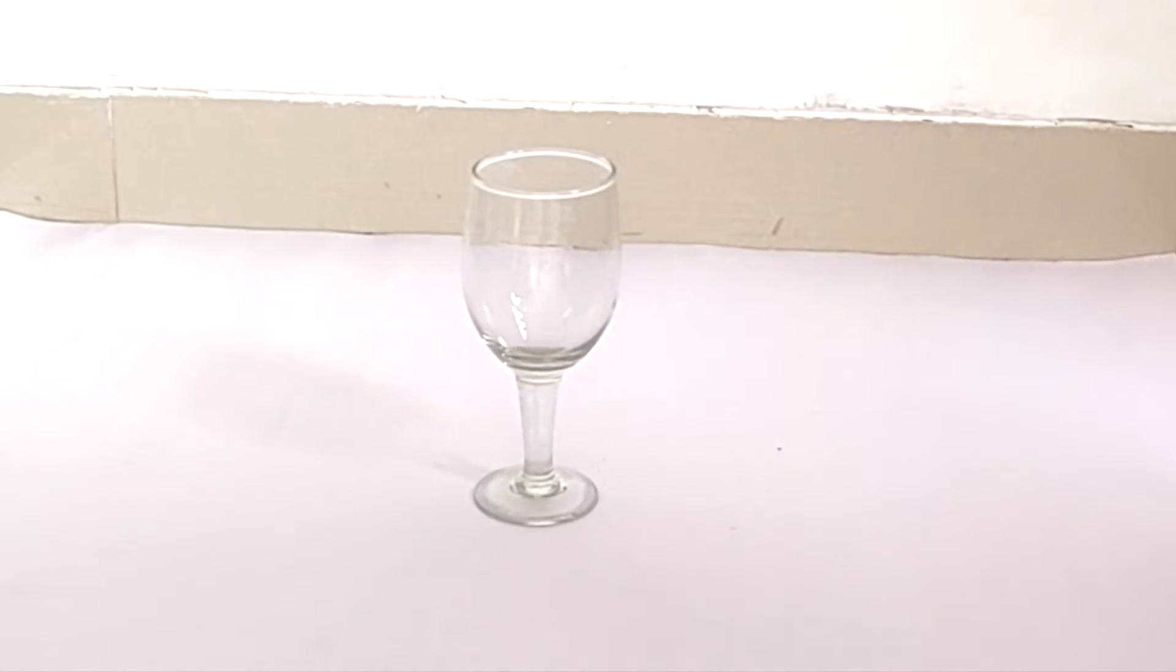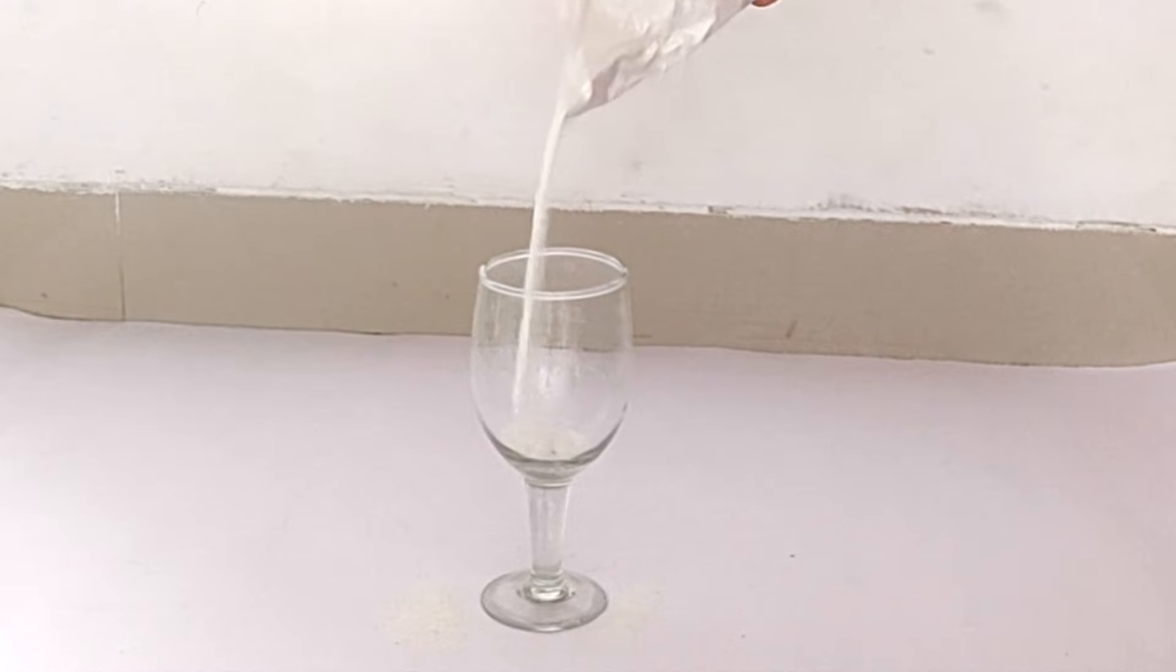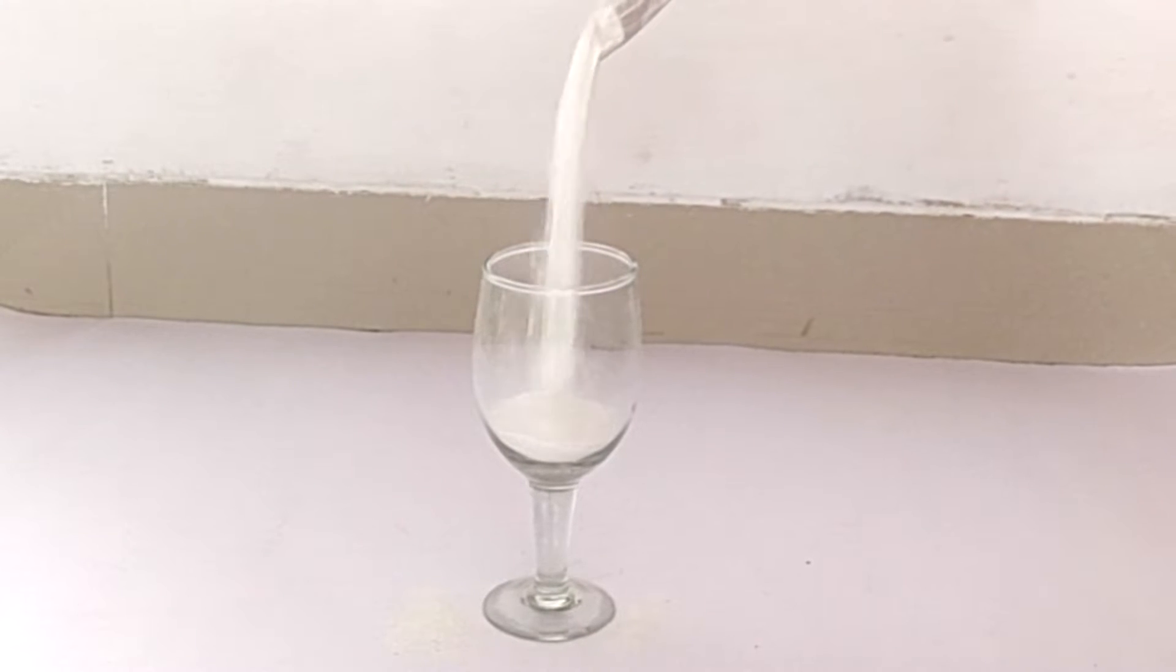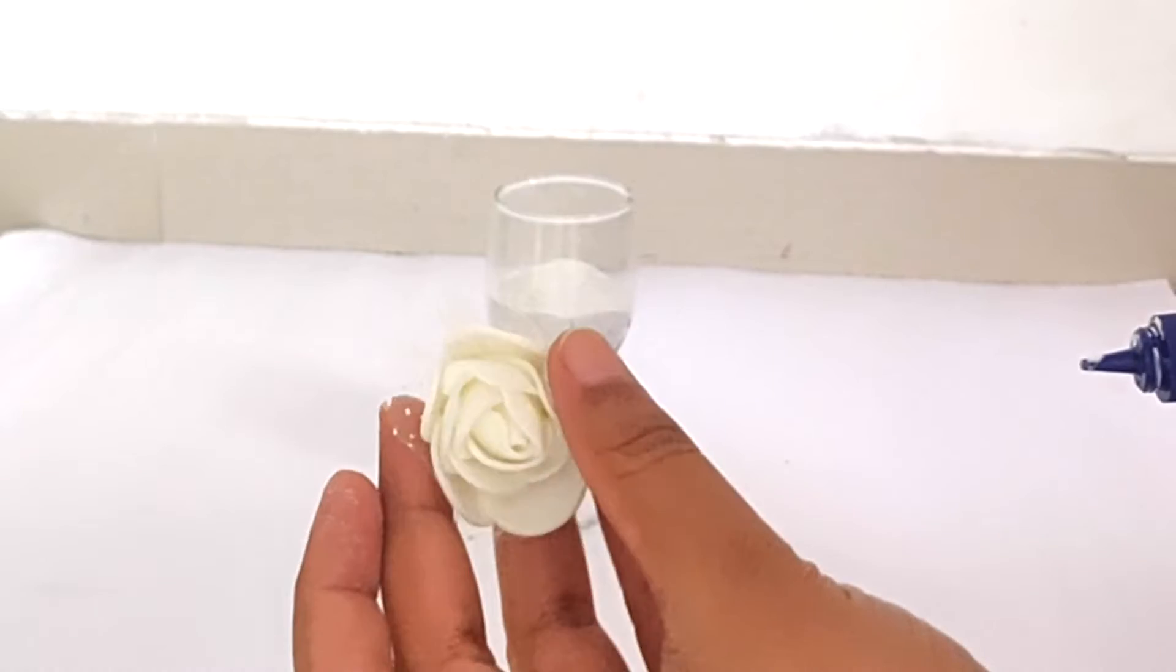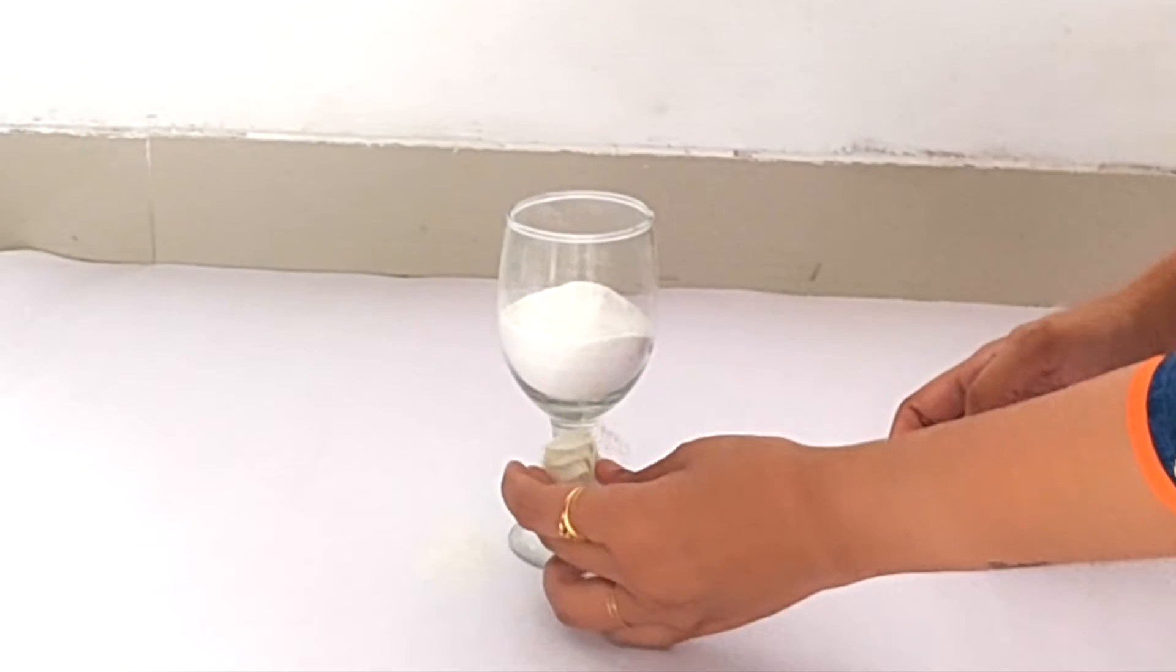For the next DIY, I am using a wine glass and adding white rangoli inside it till it fills half. And you can replace rangoli with salt if you don't have it. Now attaching this white rose at the bottom of the glass.